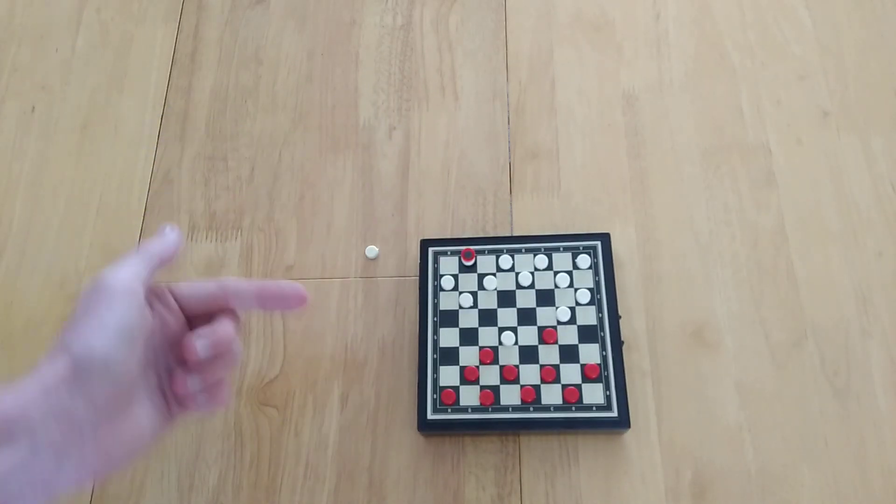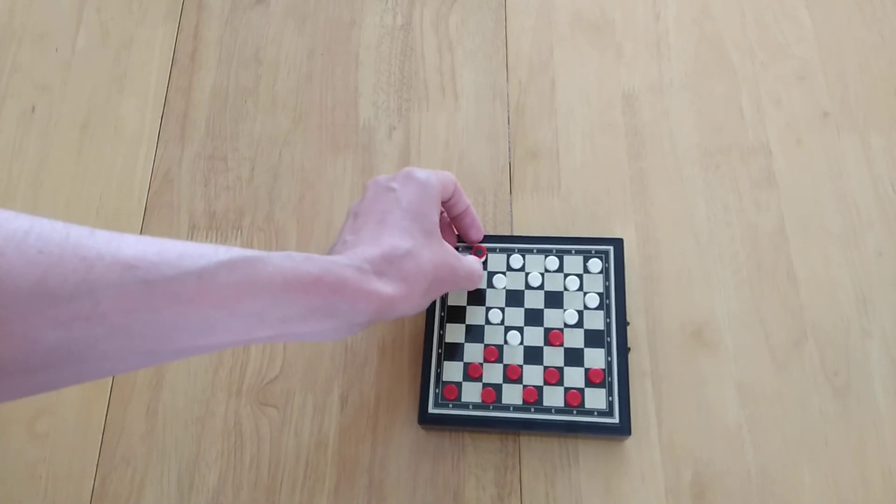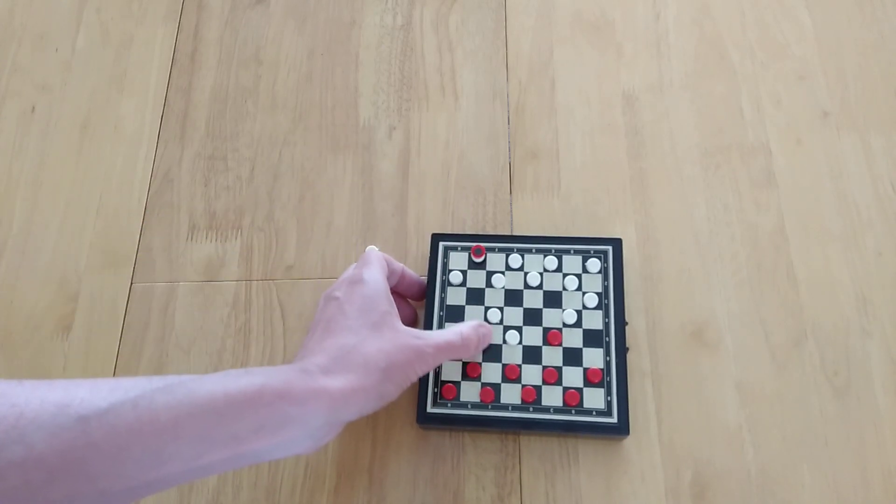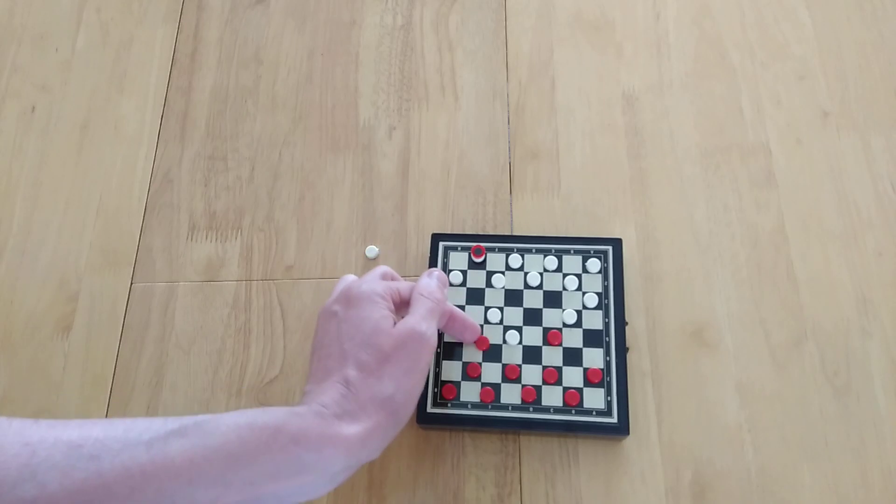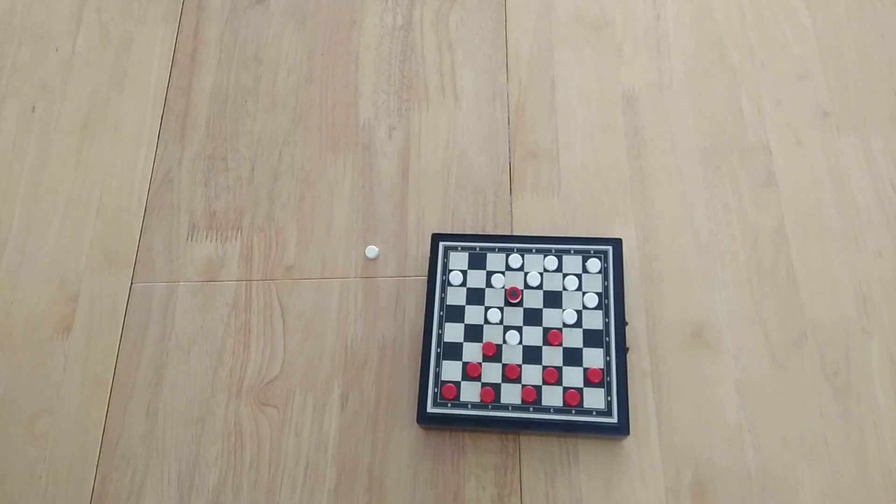So now what happens is they have their turn and let me maybe move here. And now it's my turn. And what I can do is rather than moving forward, which risks them capturing me, I could choose to do this. This means basically because I'm a king, I can move backwards. I can move back in any direction. Normally you can only move forwards and that comes off the board.